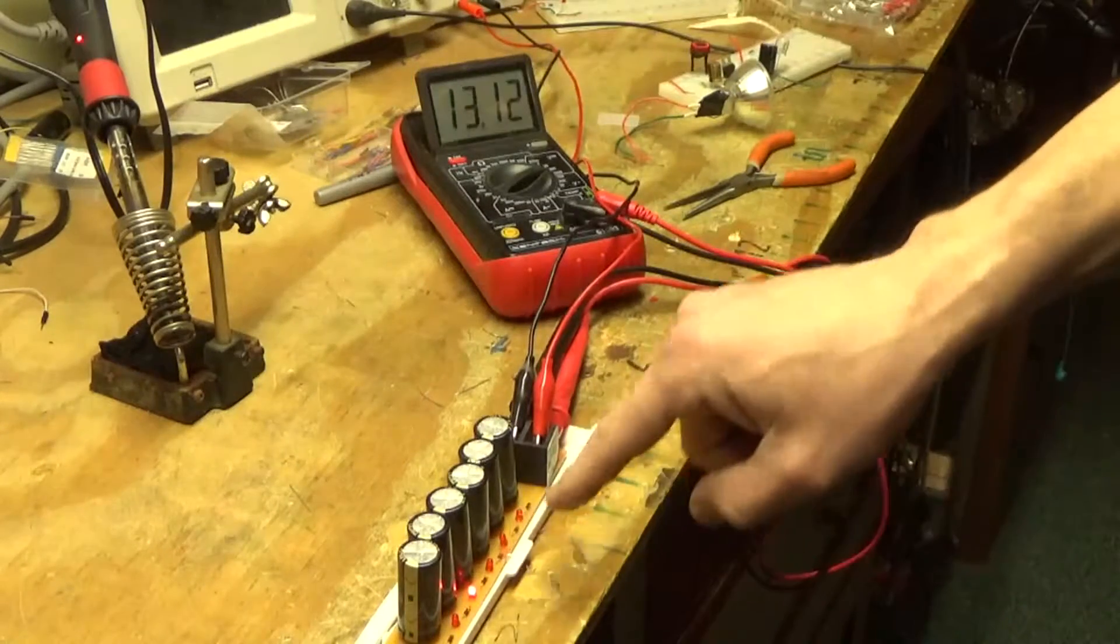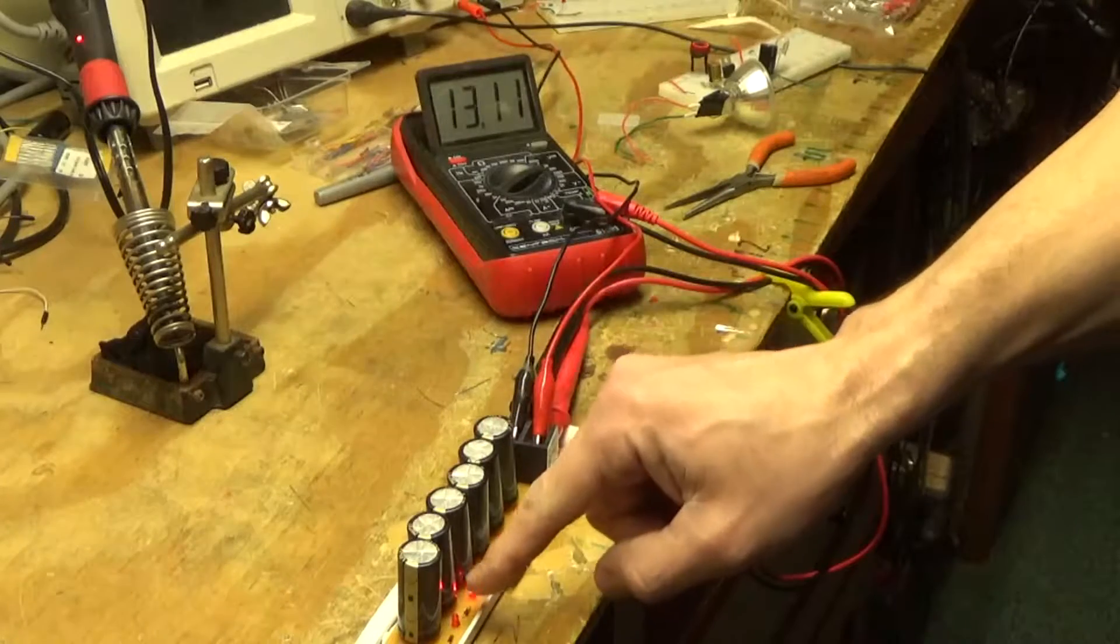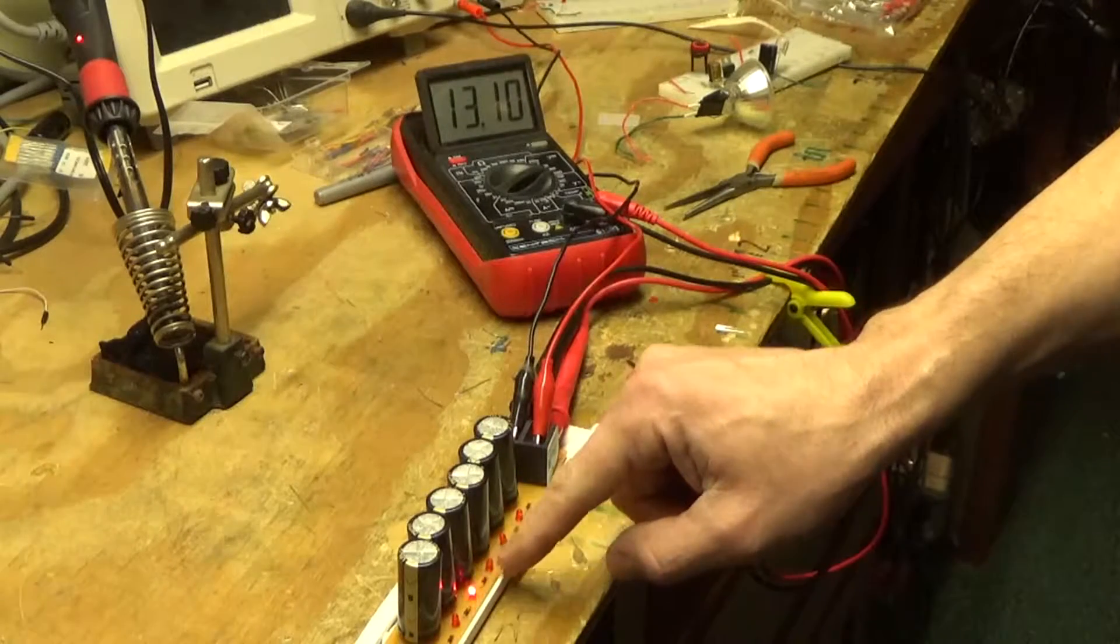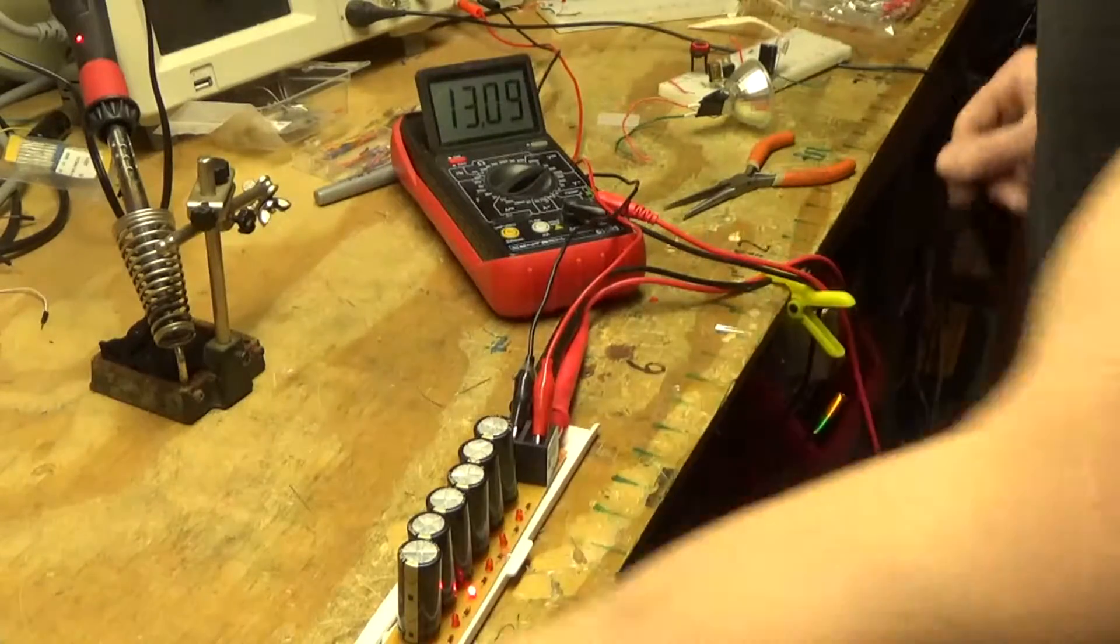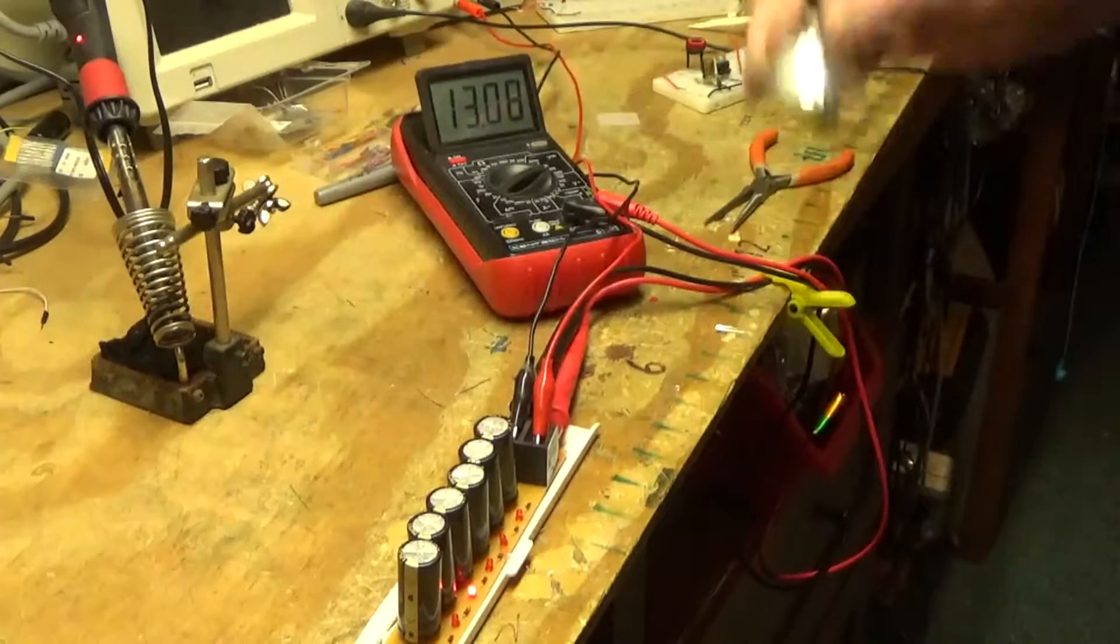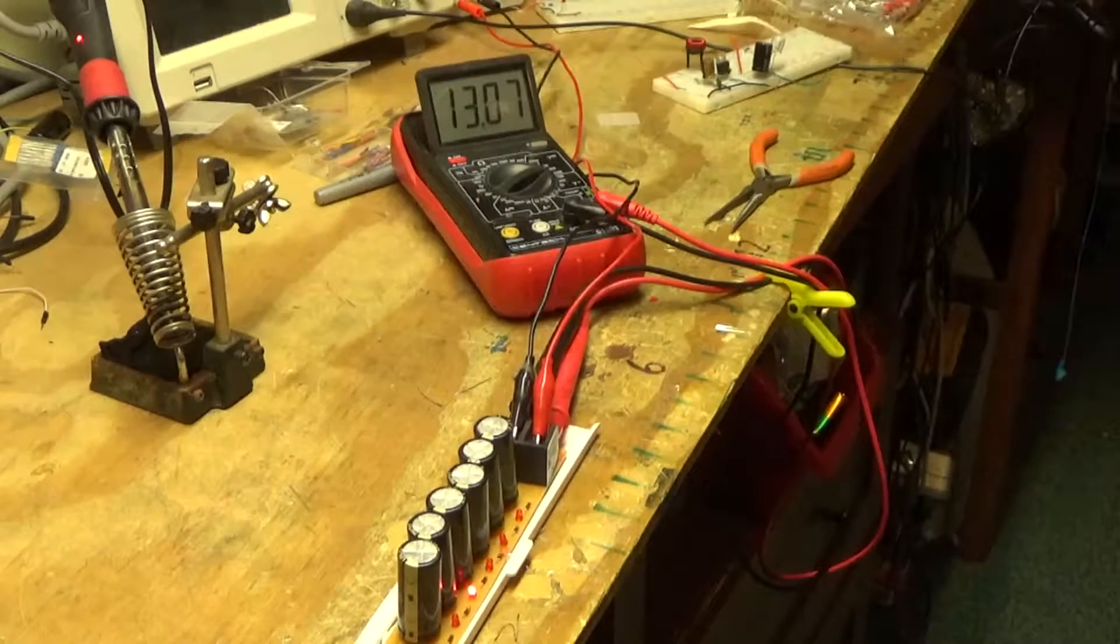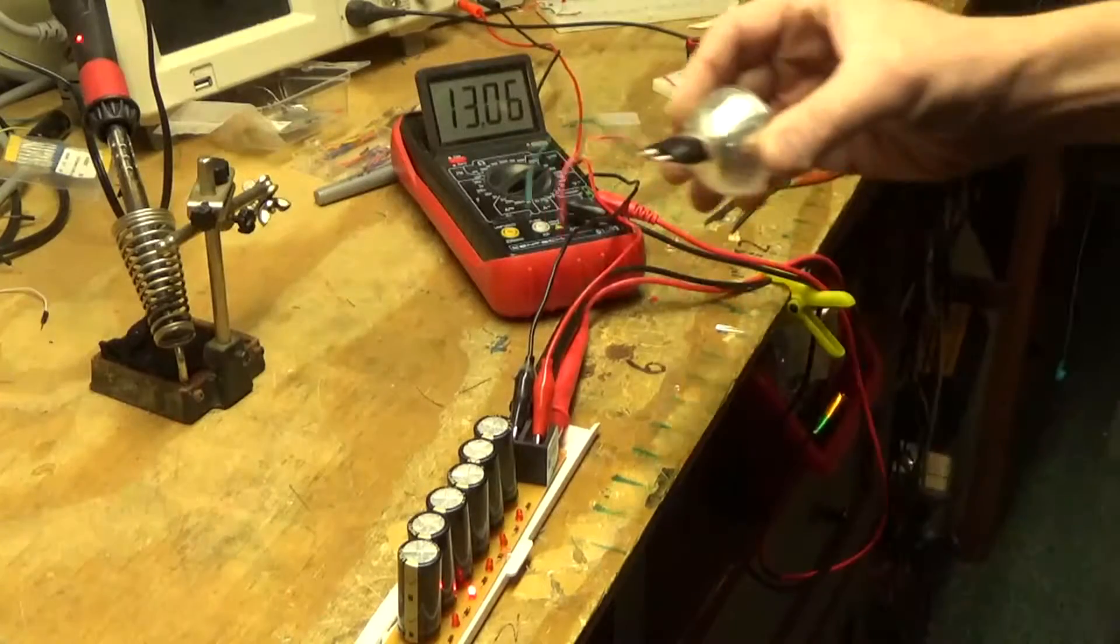As you can see I have 13 volts on here. This light's on here, so I think there might be a problem in this area here somewhere. But now for the fun stuff. Let's see what we can do with the charged capacitor.